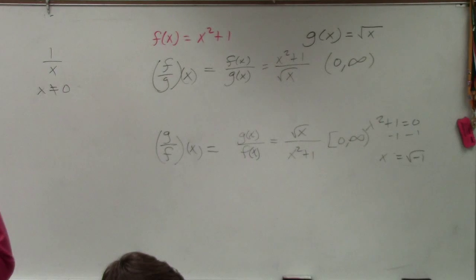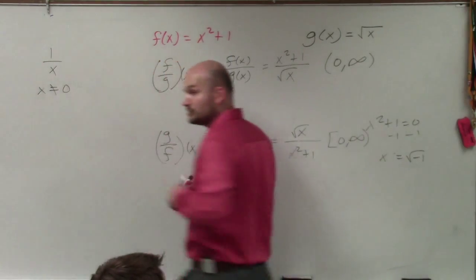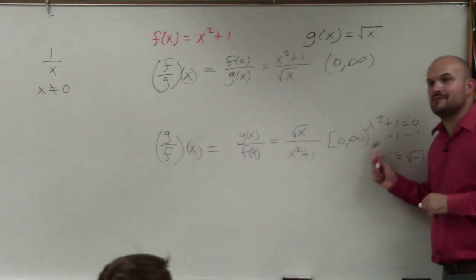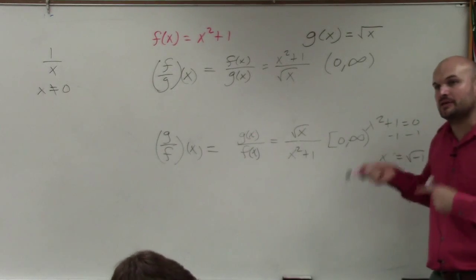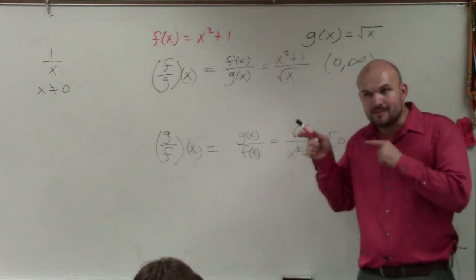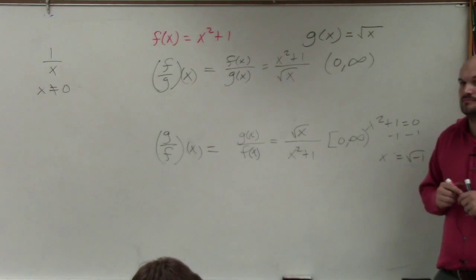Where did that x squared plus 1 equal 0 come from? Whenever I'm trying to find the domain and I have a rational function, I always set the denominator equal to 0, because that's going to tell me what values make the denominator equal to 0. And those values that make the denominator equal to 0 are not a part of my domain.